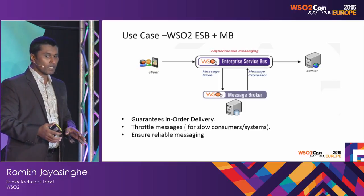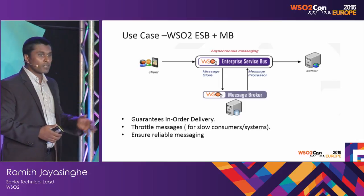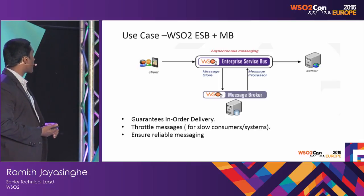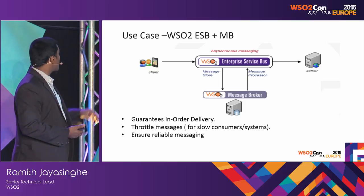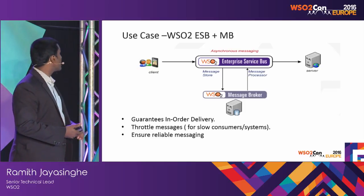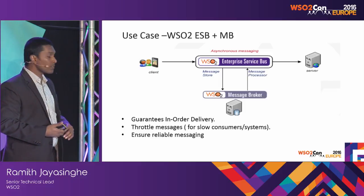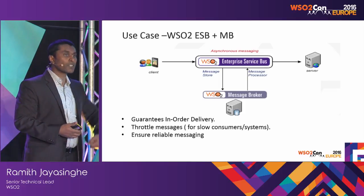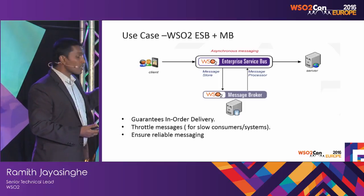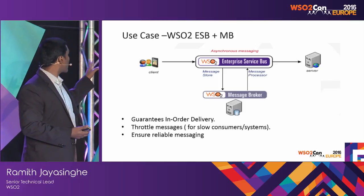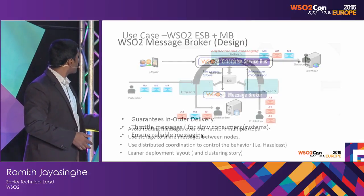Most of the time we use a message broker and the ESB together. One frequent pattern is store and forward. The ESB has a message store component that keeps sending received messages to the message broker. A message processor component then takes those messages and sends them to the back end. This gives you the ability to throttle messages for a slow consumer and ensure reliable messaging.